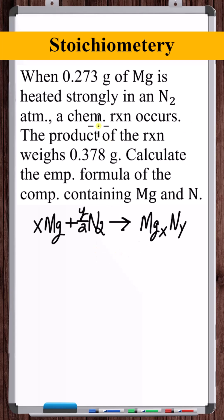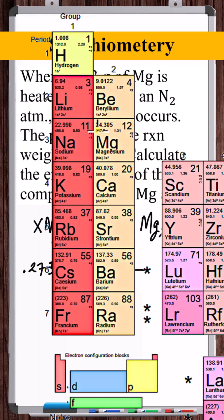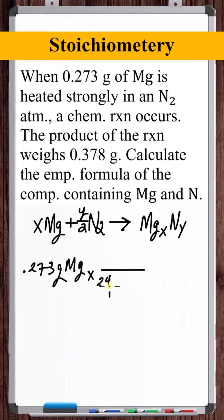Now what we can do is use stoichiometry to calculate in terms of X and Y how many moles of this MgXNY compound are produced from 0.273 grams of magnesium. If we start off with 0.273 grams of magnesium, let's convert this to moles. The molar mass of magnesium is 24.305, so you've got 24.305 grams of magnesium for every one mole of magnesium.